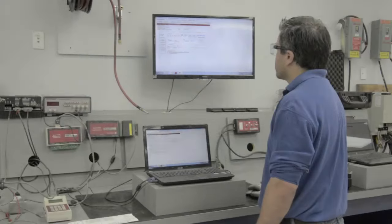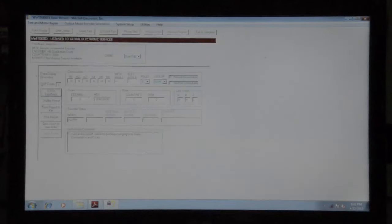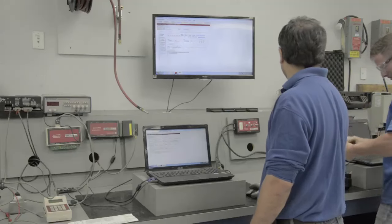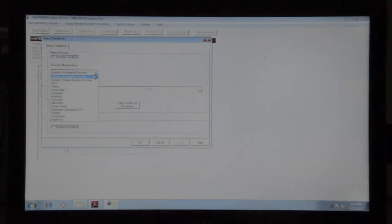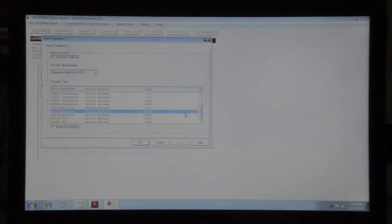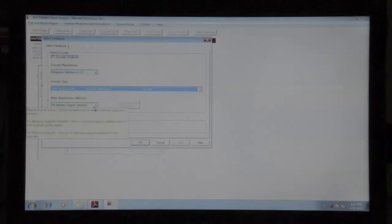Now we need to select the feedback in our Mitchell software. Our motor here has an encoder. Next, we need to select an encoder manufacturer such as Finick, Heidenhain, Indramat, Mitsubishi. This particular encoder is a Stegman. Now we choose our manufacturer type. This one is an SRM. And we select our motor manufacturer. This one is an Allen Bradley MPF.